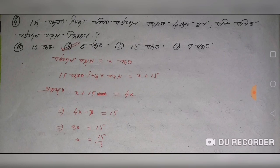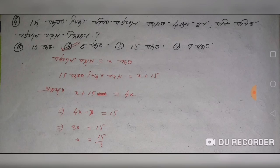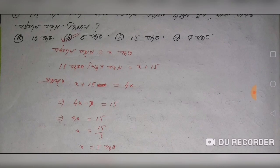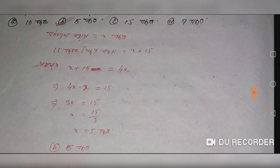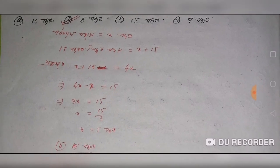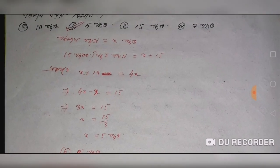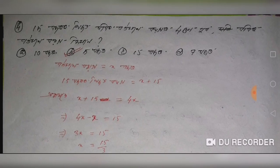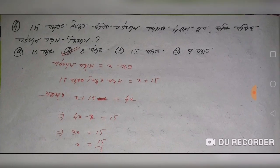15 equals 4x, so 4x minus x equals 15, and x is 15 by 3, equals 5. So 5 plus 15 gives us 20.